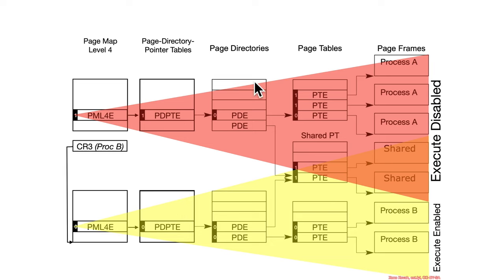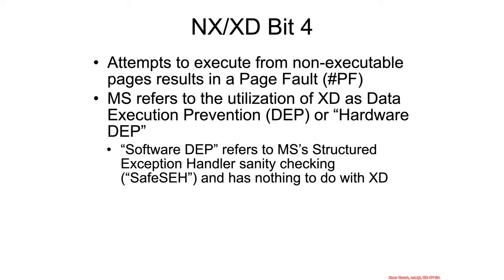So in this entire picture, all of this region is non-executable, and another region is executable only because everything upstream from it has the execute-disable bit not set. If the processor tries to do any instruction fetches for execution from one of these non-executable pages, that does result in a page fault.